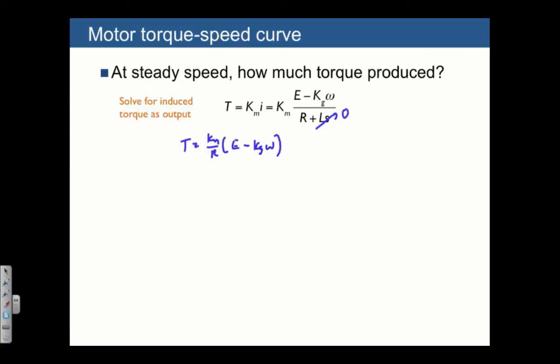Generally, this is going to show a decrease in torque as a function of omega. You can see this is linear in omega, so we expect a straight line. Now let's try to figure out what the intercepts are. First, we can plug in omega equals zero. If that were the case, then T equals Km over R times E. In other words, we know where the torque is going to be at omega equals zero. It's Km over R times E.